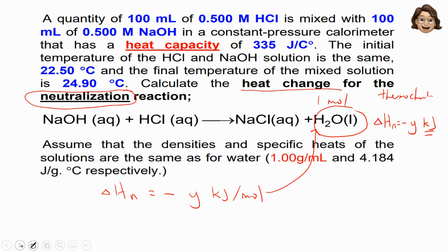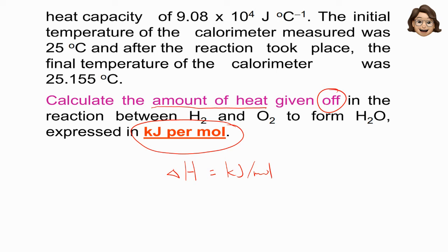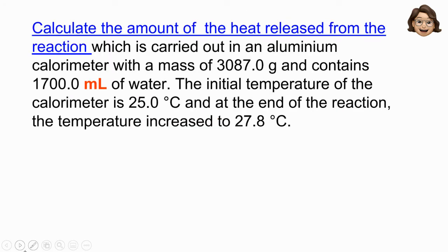Another type of question: calculate the heat given off in kilojoule per mole. This is straightforward — you write enthalpy H equals the answer in kilojoule per mole. Since it says 'given off,' the value must be negative, so the answer is negative x kilojoule per mole.